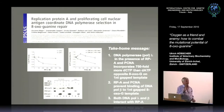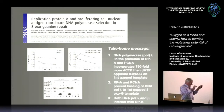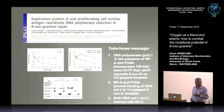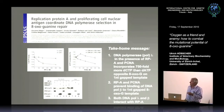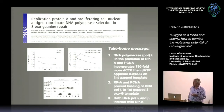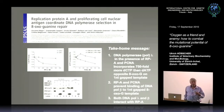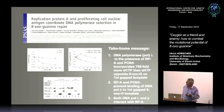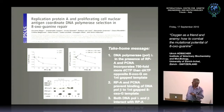In the next experiments we used a nicked template with an 8-oxoG creating a gap, asking what is required to replicate this properly. Again the key finding was that pol lambda in the presence of RPA and PCNA incorporates C 750-fold more than A. Furthermore, those two proteins repress other repair polymerases such as pol beta under this condition, while increasing the faithful incorporation by pol lambda.